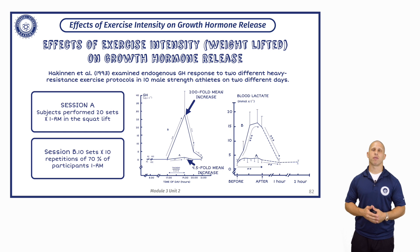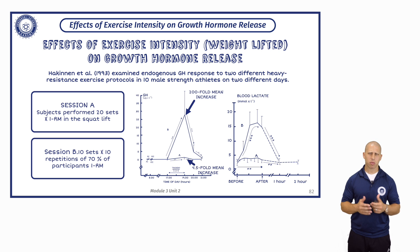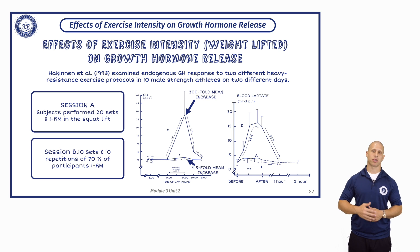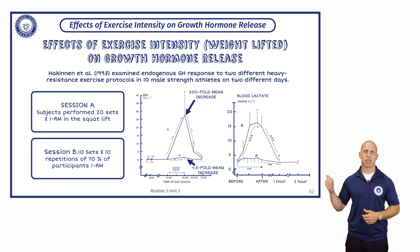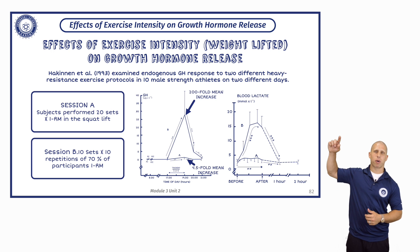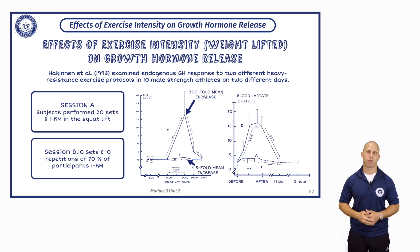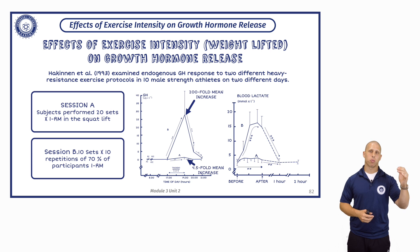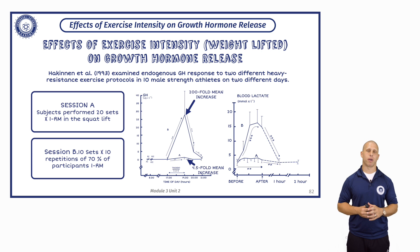If you look at this first figure on your left, there are two sessions: session A, where subjects did 20 sets of one, and session B, where subjects did 10 sets of 10. It was a crossover design — subjects came in one week and did one, then the other week did the other, and this was in the squat. In session B, the 10 sets of 10, immediately following exercise there's a huge spike in growth hormone that comes back to baseline an hour after exercise. Following session A, there's just a very small increase in growth hormone, almost no change at all. 20 sets of one is high intensity; 10 sets of 10 at 70% is high volume. So it's the volume that's driving the growth hormone response, not the intensity.